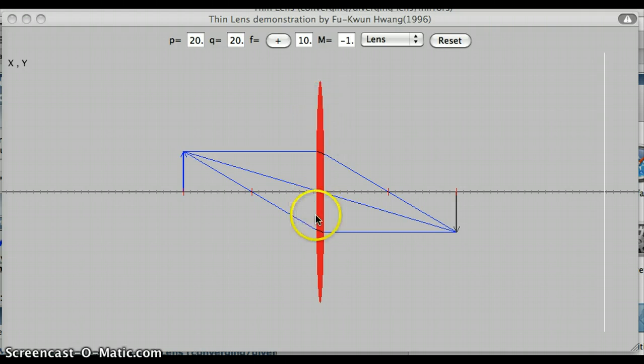So here we have a lens, an object, the three principal rays, and the image.